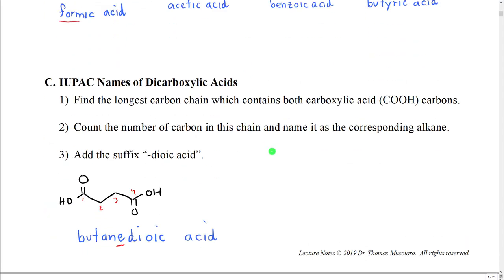We also would like to learn how to name dicarboxylic acids because there are a number of very important biologically important dicarboxylic acids. To name a dicarboxylic acid, we're going to find the longest carbon chain which contains both carboxylic acid carbons. We're going to count the number of carbons in this chain, name it as the corresponding alkane, and then add the suffix '-dioic acid'.